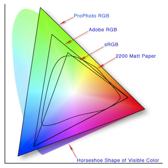Color space conversion is the translation of the representation of a color from one basis to another. This typically occurs in the context of converting an image that is represented in one color space to another color space, the goal being to make the translated image look as similar as possible to the original.